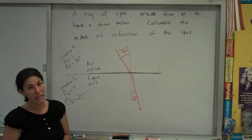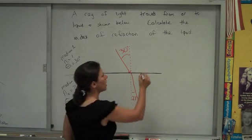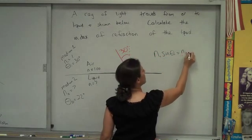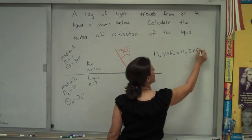So we have three of the four things in Snell's law. Snell's law looks like this, n1 sine theta 1 is equal to n2 sine theta 2.